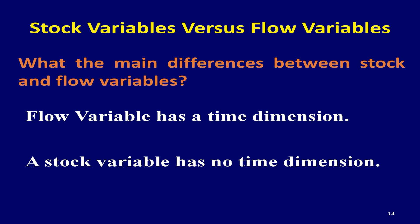A flow variable is a variable that is measured over a period of time. A flow variable has a time dimension; therefore, it is a dynamic concept. A stock variable is a variable that is measured at a particular point in time. A stock variable has no time dimension; hence, it is a static concept.